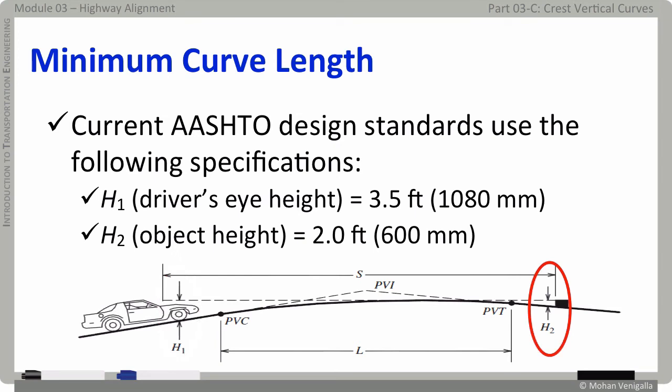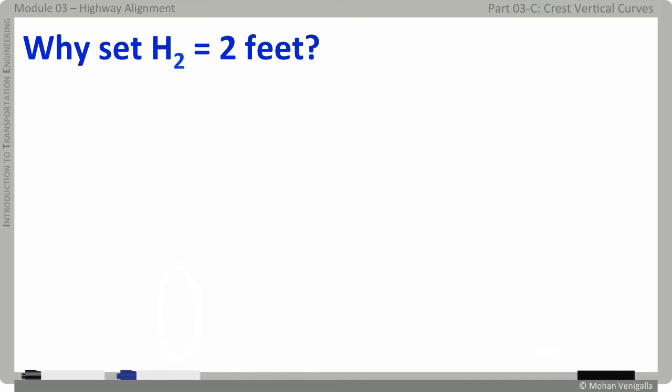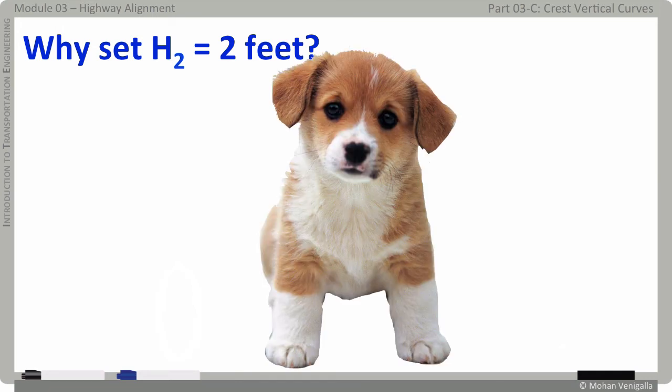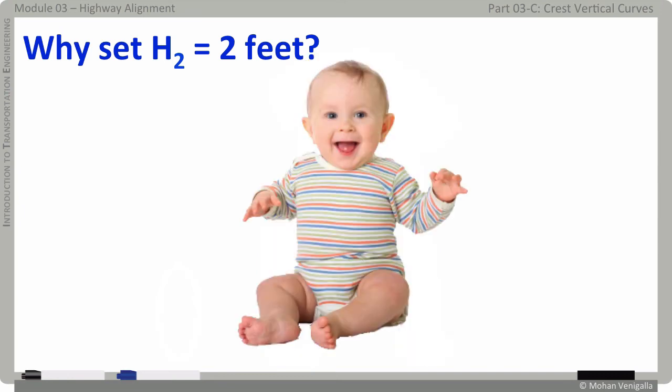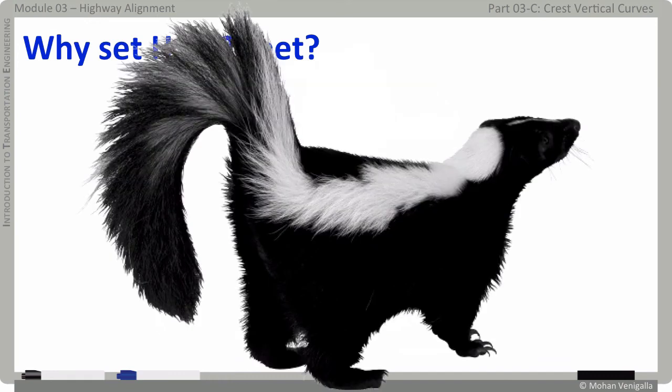Then what about the object height H2? AASHTO recommends using 2 feet for H2. Why 2 feet for H2? Beats me. I would like to venture a wild guess. Maybe because puppies are about 2 feet on their hind legs? Puppies are cute and nobody wants to run over puppies, do they? Or is it because babies sitting on their butts are about 2 feet tall? You don't think that anybody would want to run over baby while driving, do you? Wait, why would anybody expect babies in the middle of the road even as unexpected stimulus? I get it. It got to be this guy. Trust me, even if no one cares about these poor little creatures, nobody wants to run over a skunk. Nobody.